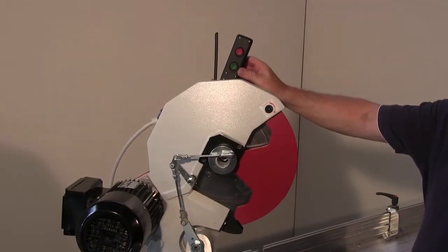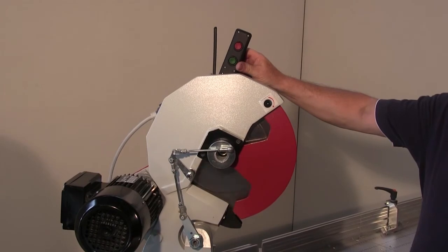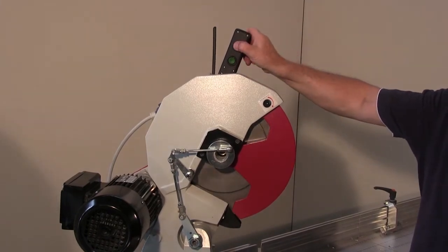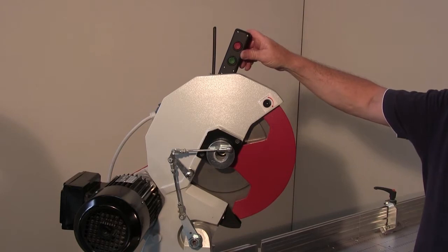Turn on the saw with this green button and turn it off with this red button. Shutdown is accelerated and lasts no more than 5 seconds.